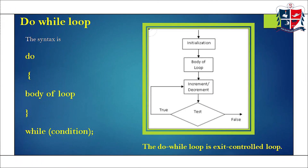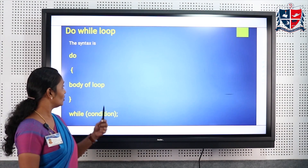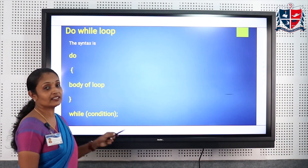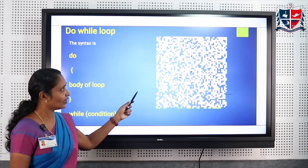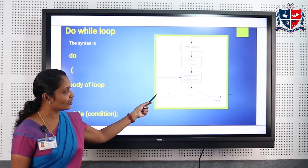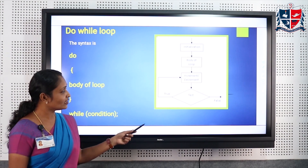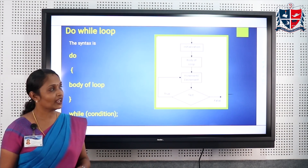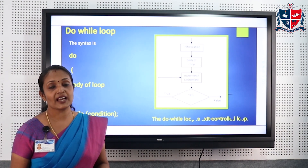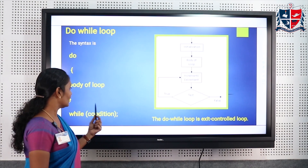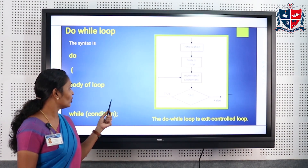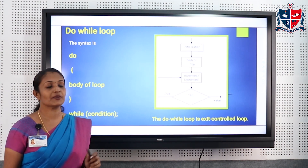The next looping statement used in C is the do-while loop. The syntax is: do { body of the loop } while (condition). In this case the body of the loop is executed first and then the condition is evaluated. Initially we initialize the variable, then the body of the loop is executed and increment or decrement is performed, after which the condition is evaluated. The do-while loop is an exit control loop because the condition is evaluated at the bottom of the loop.